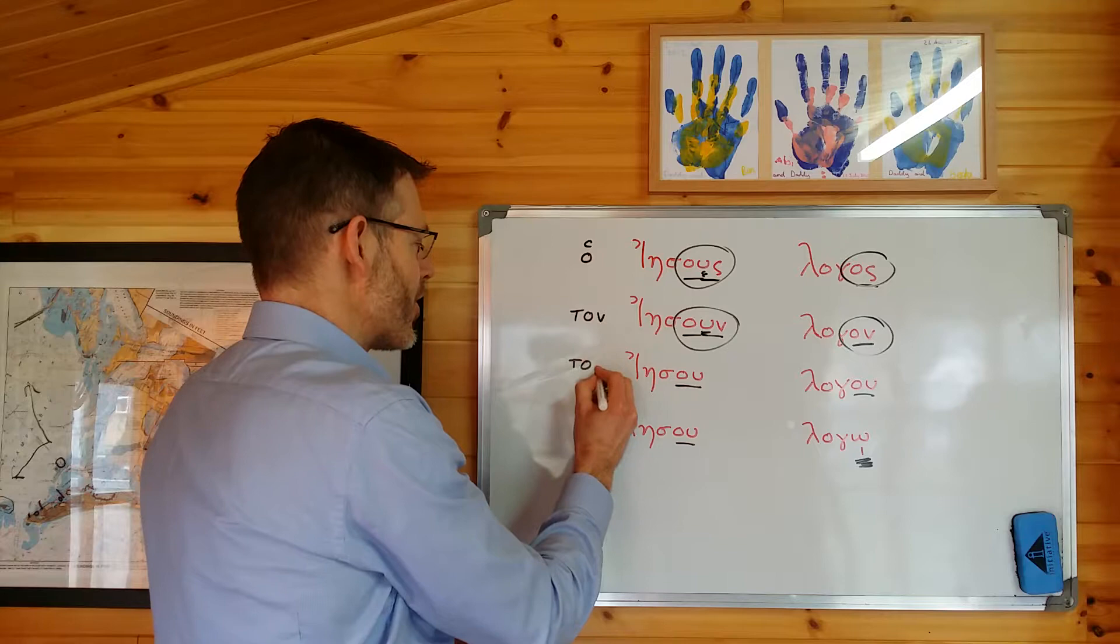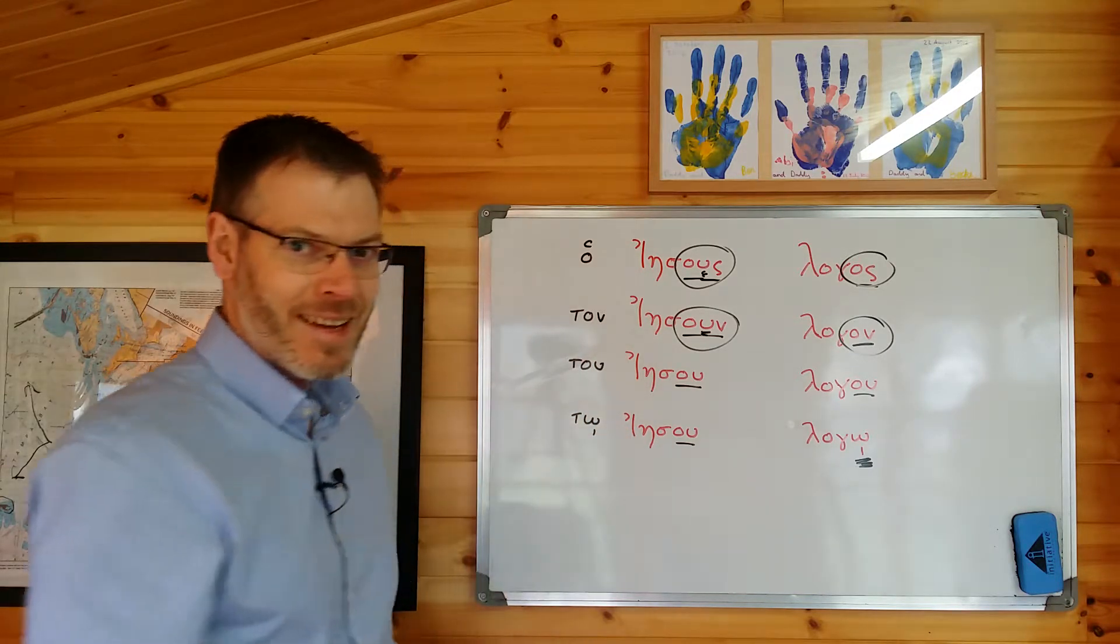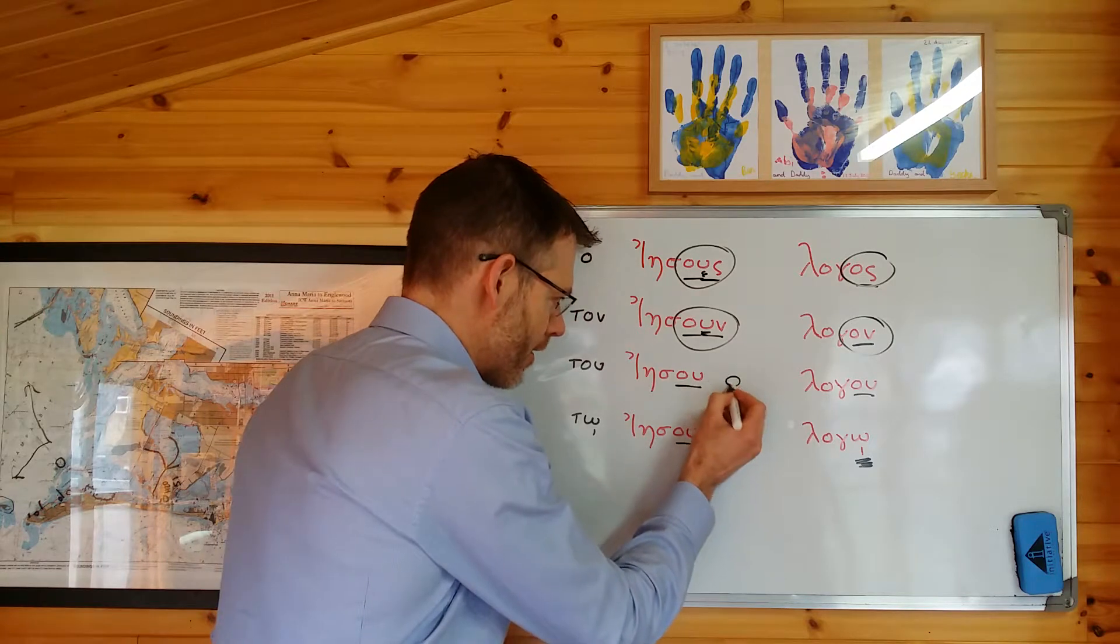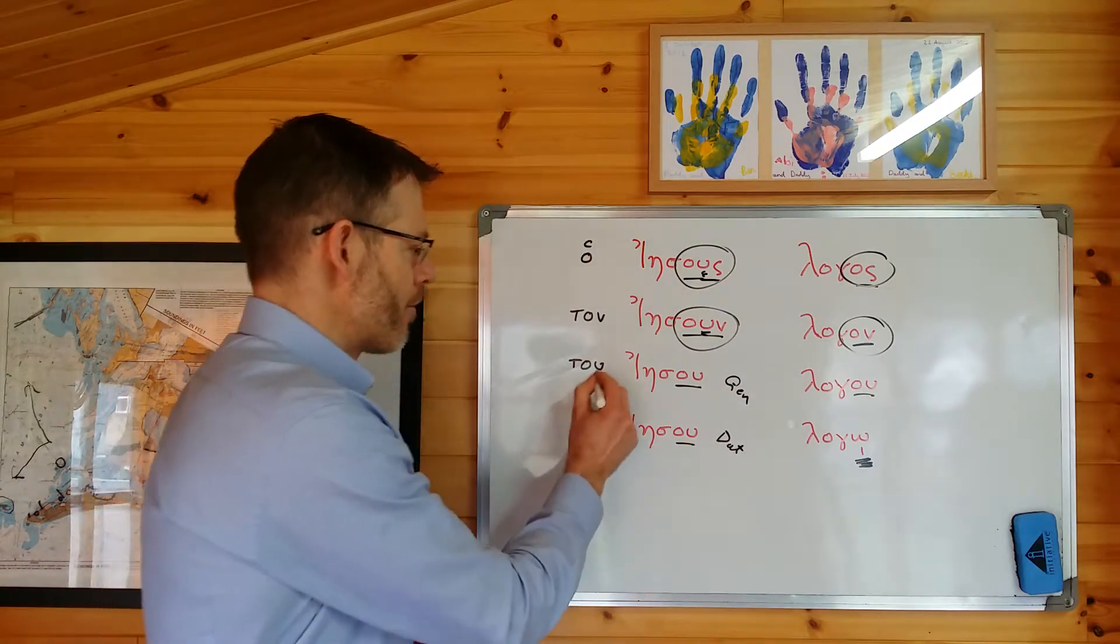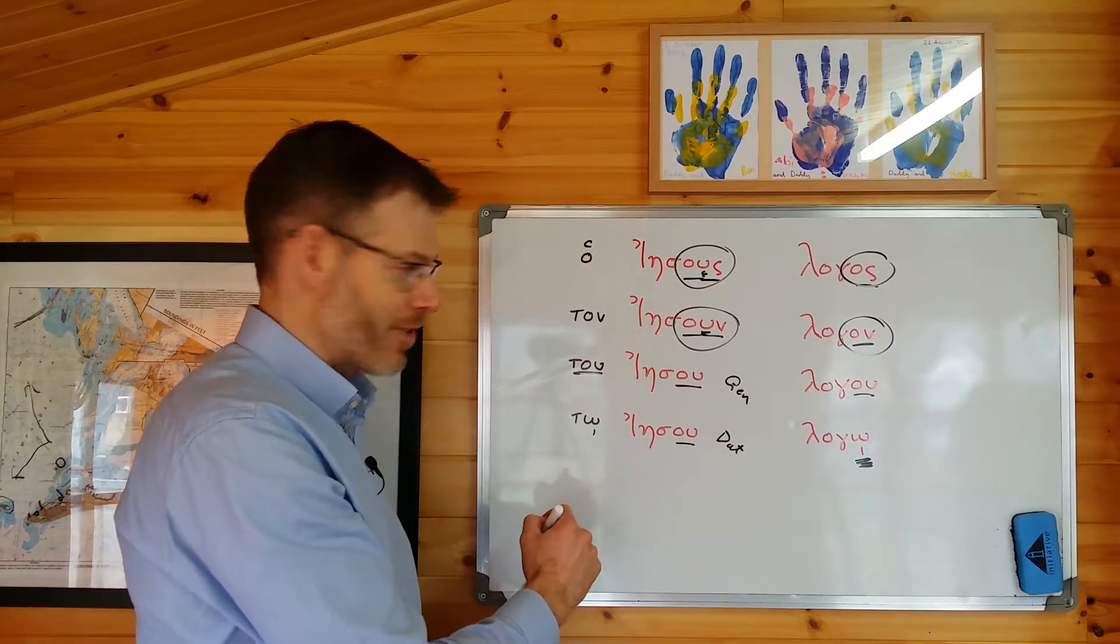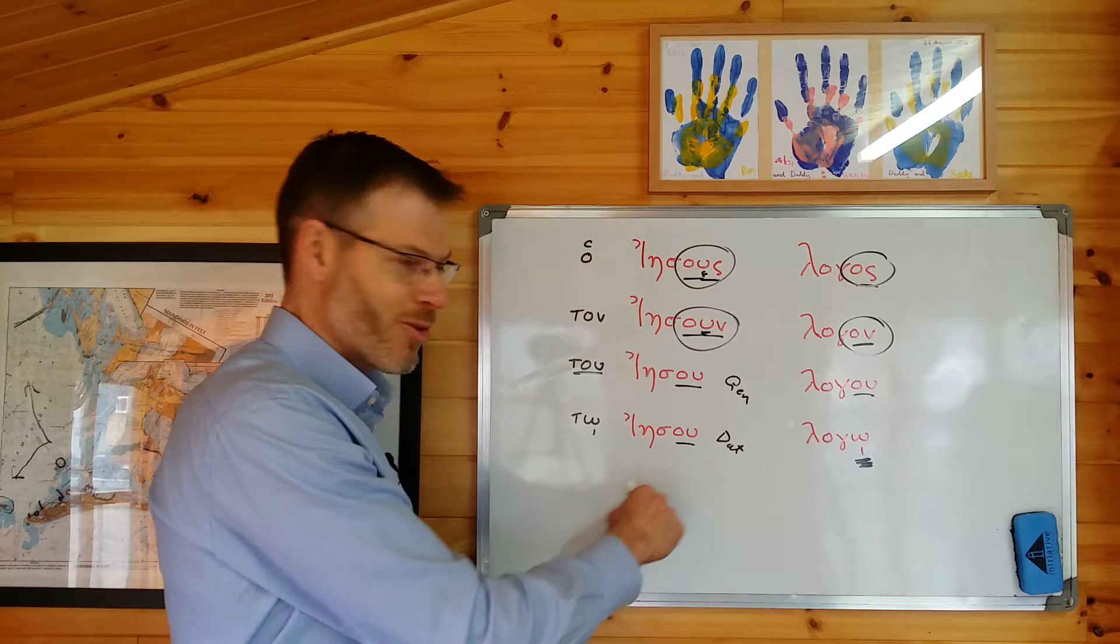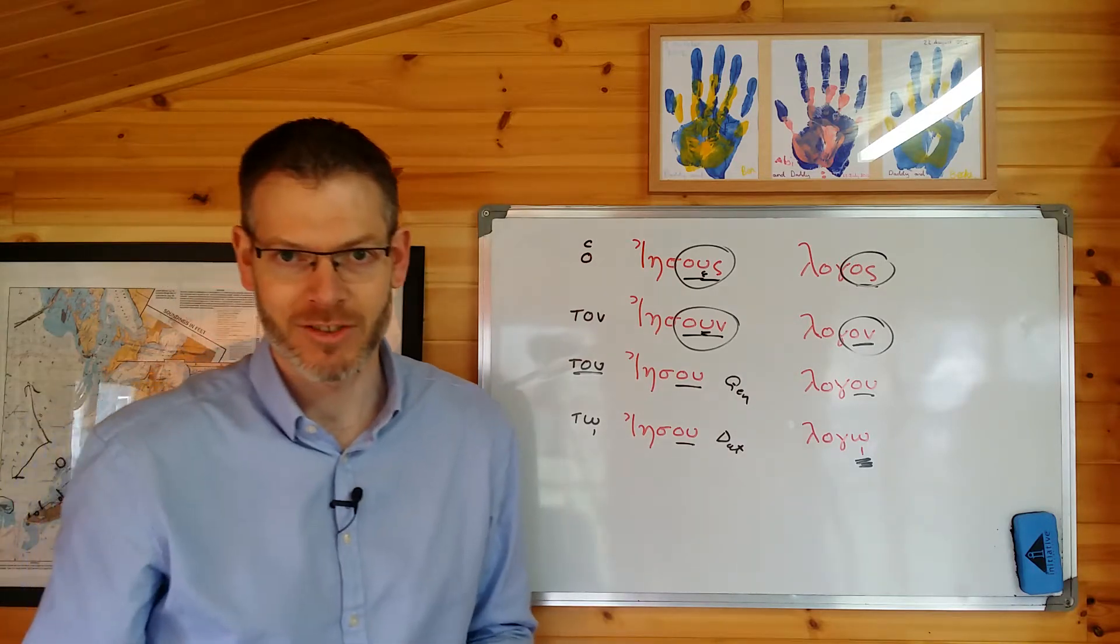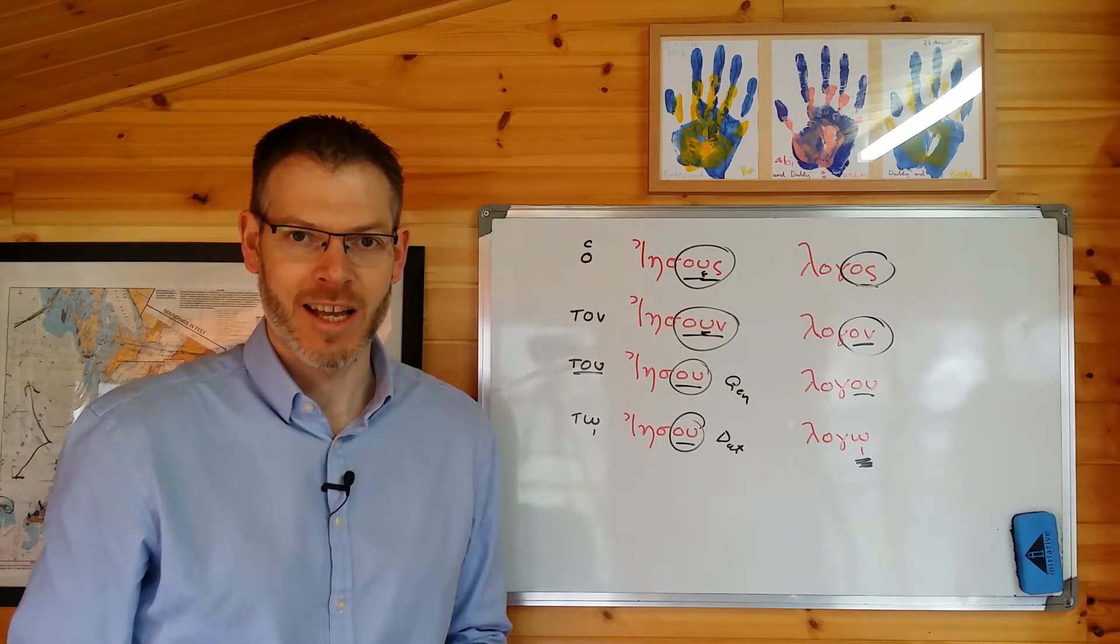And so that helps you to unequivocally distinguish between this, the genitive, and this, the dative form, because the genitive will have the genitive article, so it's of Jesus, and the dative, the dative article two or four Jesus in front of it. So you'll be able to tell just from the article, even though the endings of the genitive and dative form are the same.